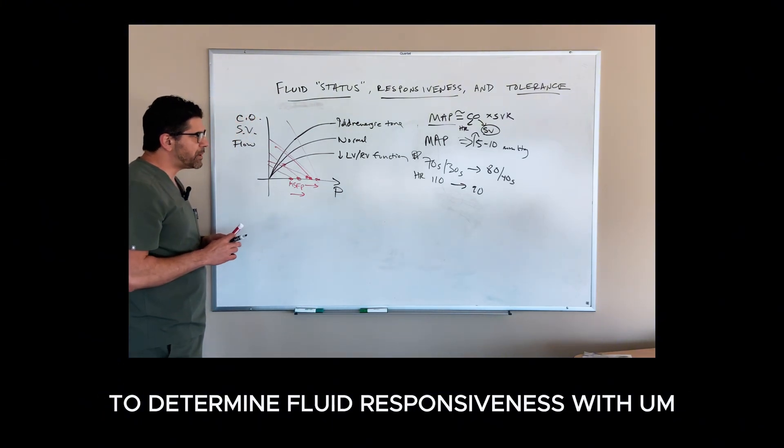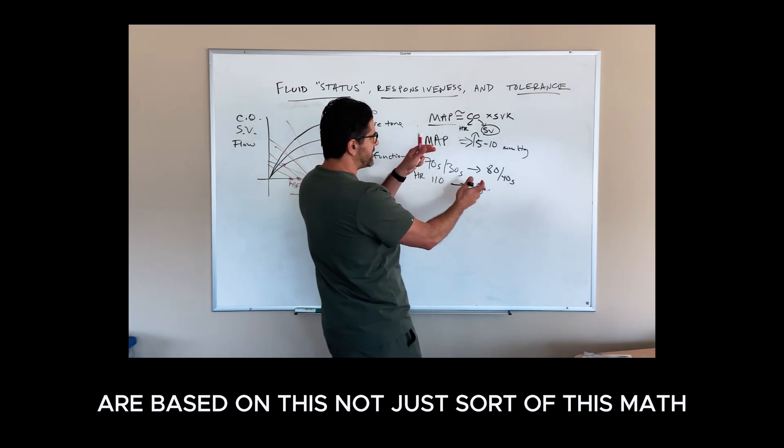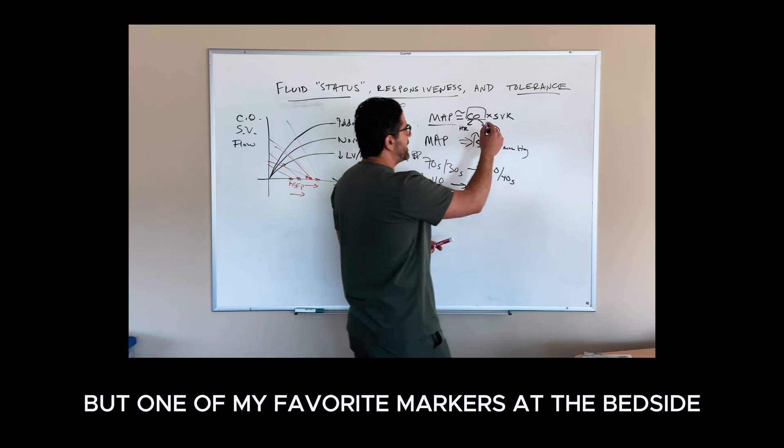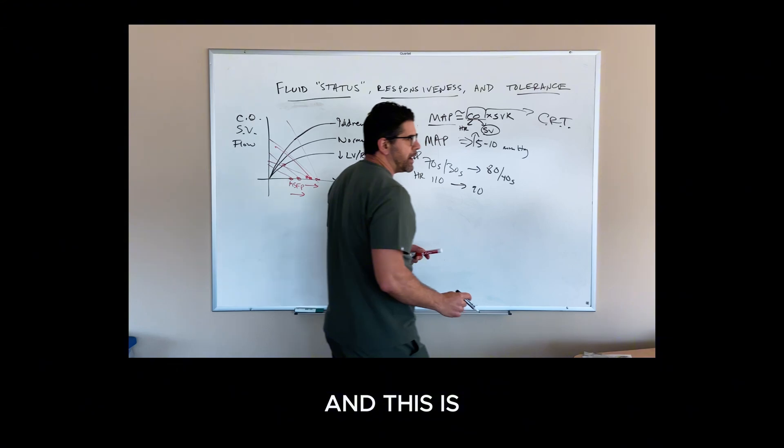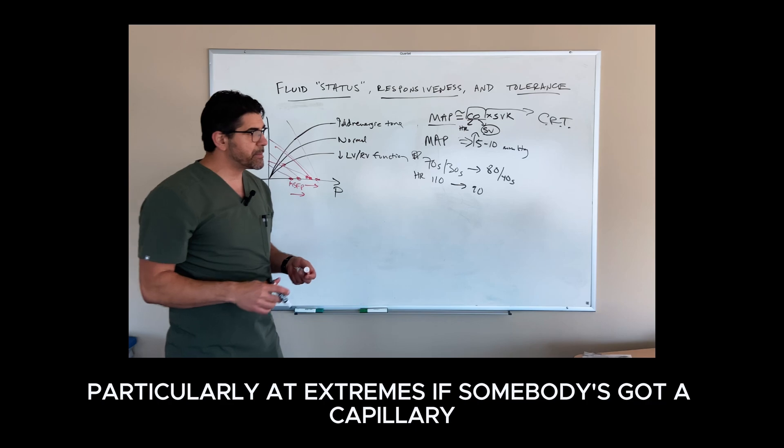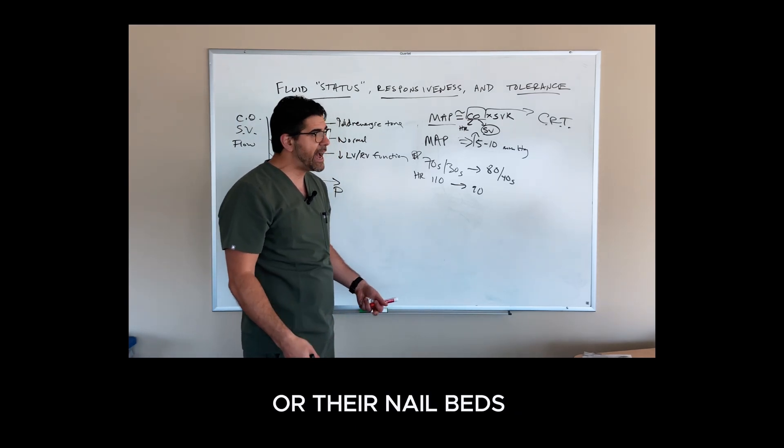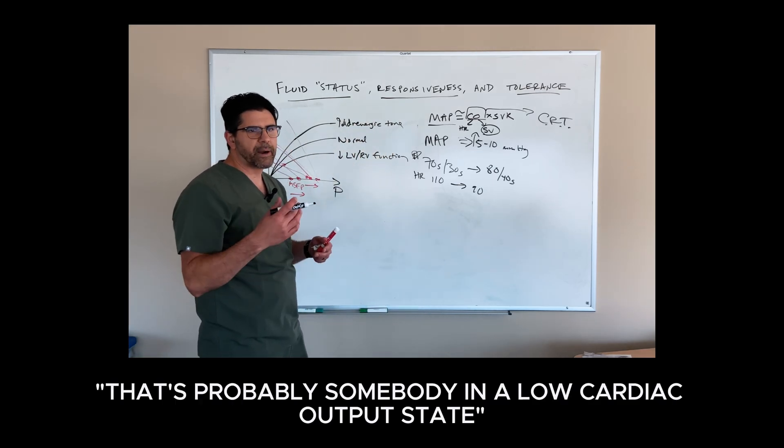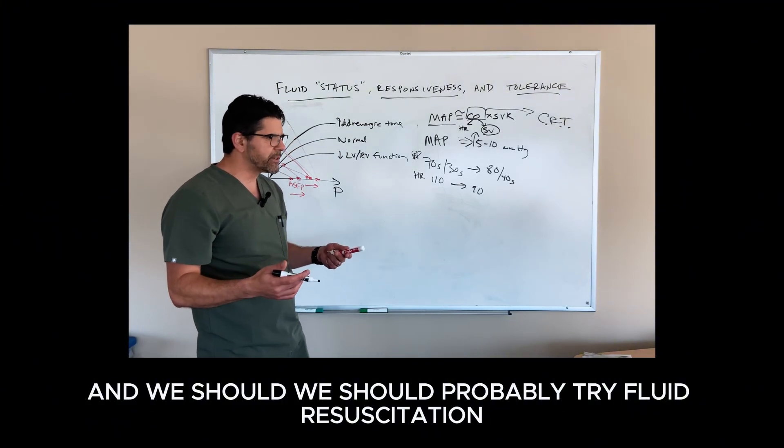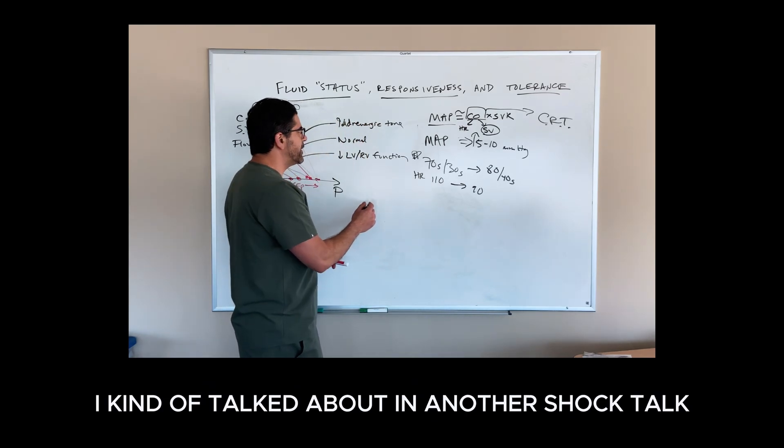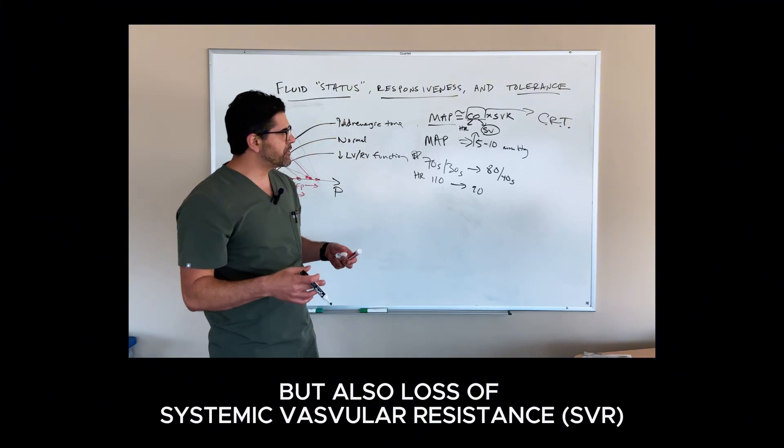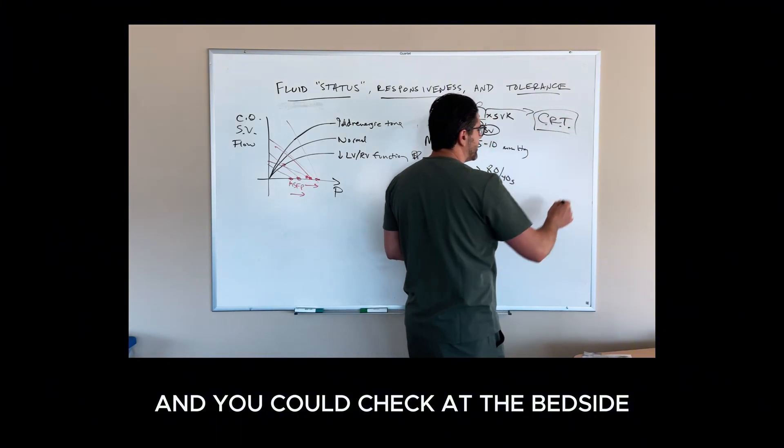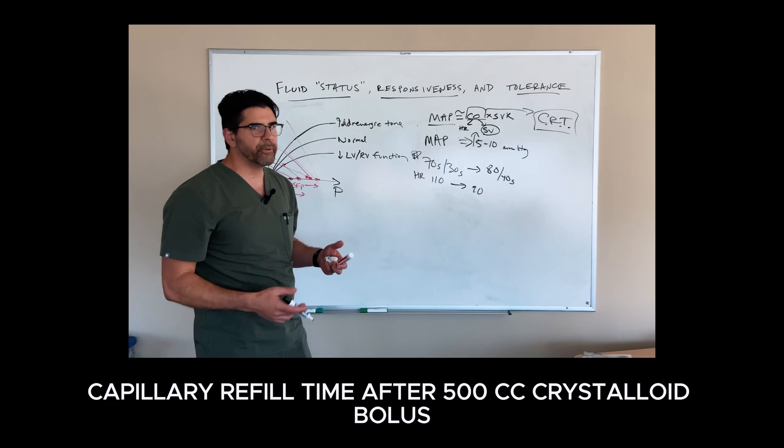A couple other things you can do at the bedside to determine fluid responsiveness are based on looking at whether cardiac output is improving. One of my favorite markers at the bedside, and it should be yours as well, is the capillary refill time. This is a valid way to ascertain cardiac output, particularly at extremes. If somebody's got a capillary refill time of two to three seconds in their finger pads or nail beds or V-caps, that patient has a high cardiac output already and is very unlikely to be fluid responsive. If they have a really prolonged capillary refill time, that's probably somebody in a low cardiac output state, and at least we should probably try fluid resuscitation. You can check at the bedside what happens to the capillary refill time after a 500 CC crystalloid bolus and say, okay, this is probably the right strategy so far.